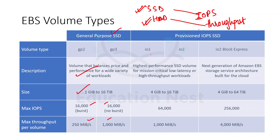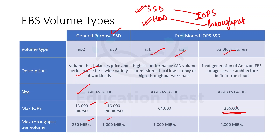Under provisioned IOPS we have IO1 and IO2. Apart from that we have IO2 Block Express, which is the next generation of EBS volumes, providing the highest IOPS of 256,000 — so you can do 256,000 input output operations per second. IO2 Block Express can handle that many input output requests. In IO1 and IO2 you get the highest performance SSD for low latency and high throughput workloads.